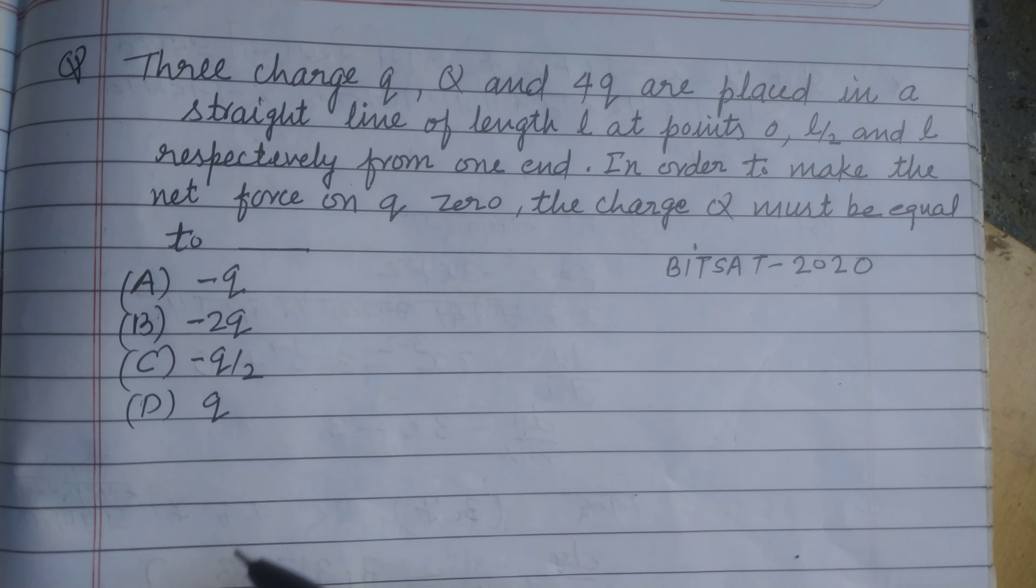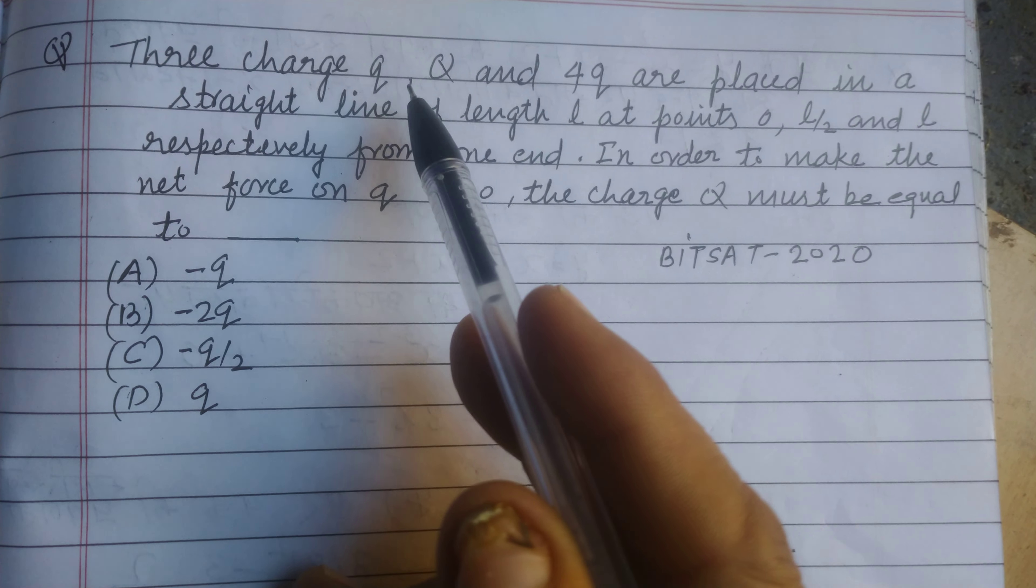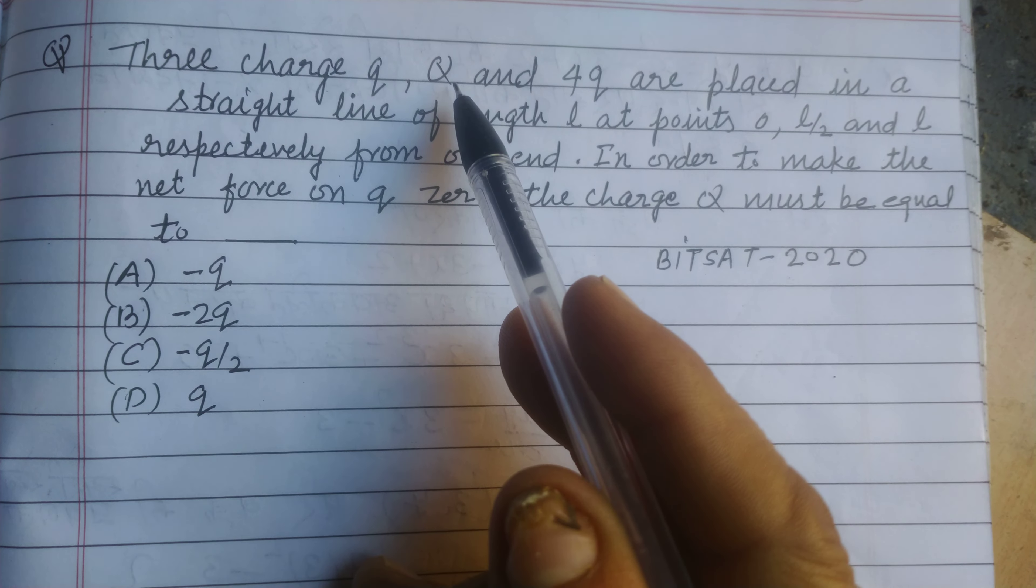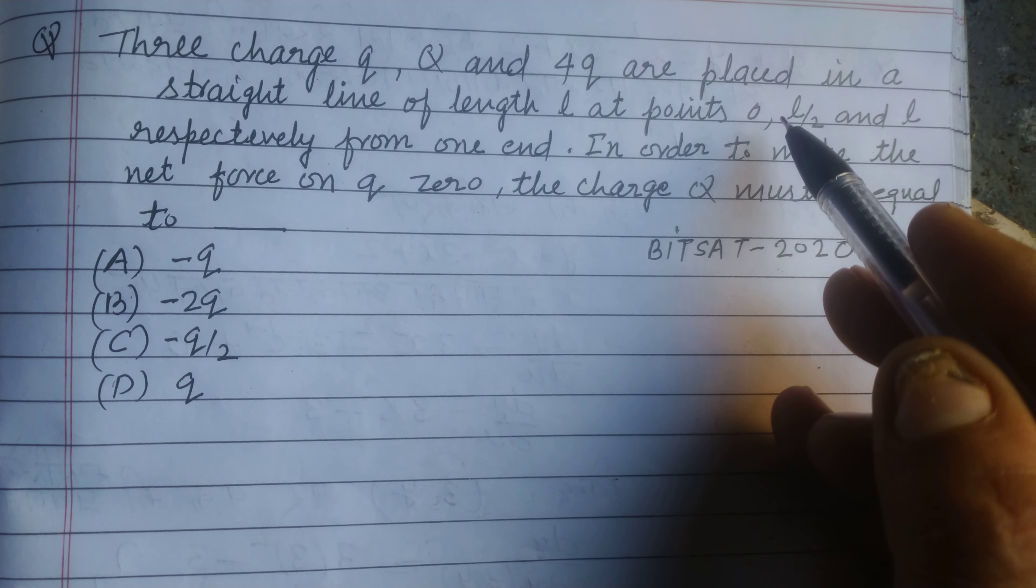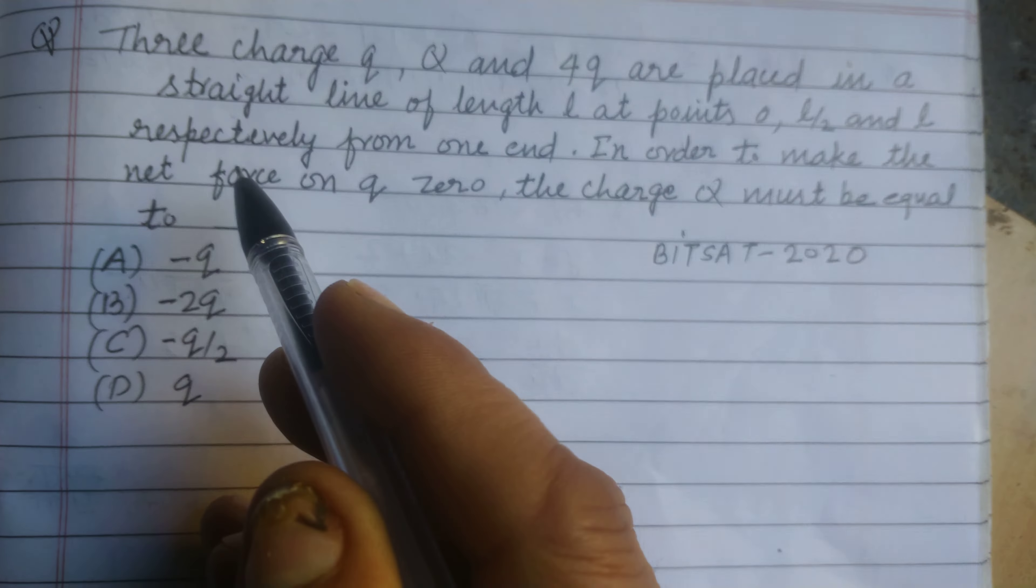Hello student and welcome to this YouTube channel. Three charges Q and 4Q are placed in a straight line of length L at point 0 and L respectively from one end. In order to make the net force on Q zero, the charge Q must be equal to...